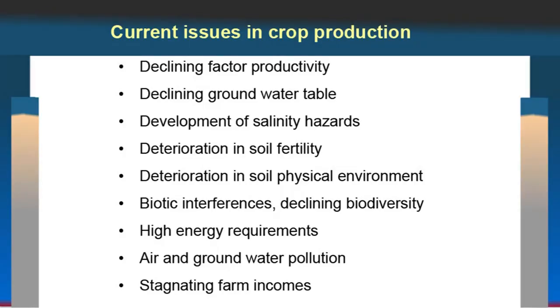Declining groundwater table is a serious concern, as pumping water from deeper layers increases energy cost. Deterioration in soil fertility and deterioration of soil physical environment, particularly by overplowing. Declining biodiversity: in Punjab, about 30-40 years back farmers were growing about 15 to 16 different crops, but now hardly 4 to 5 crops — diversity has declined. High energy requirements from fossil fuel use in plowing result in air pollution and groundwater pollution, and stagnating farm incomes.